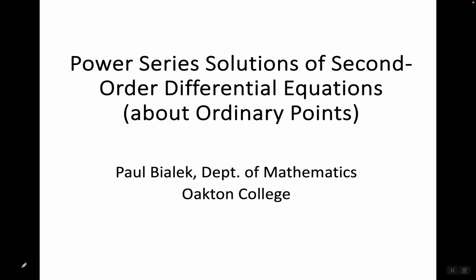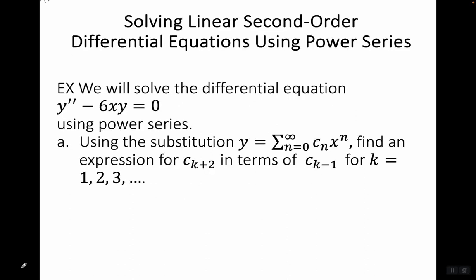Let's talk about power series solutions of second-order differential equations about ordinary points. We will solve the differential equation y double prime minus six x y equals zero using power series, using the substitution y equals the summation from n equals zero to infinity of c sub n times x to the n. We want to find an expression for c sub k plus two in terms of c sub k minus one for k equals one, two, three.